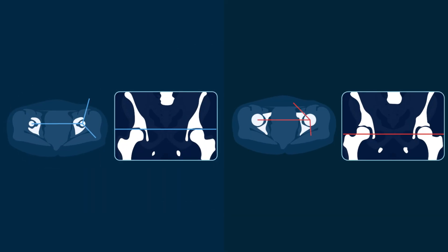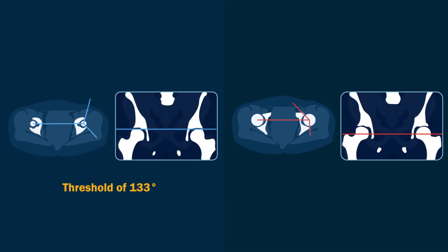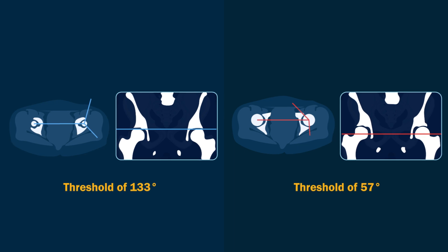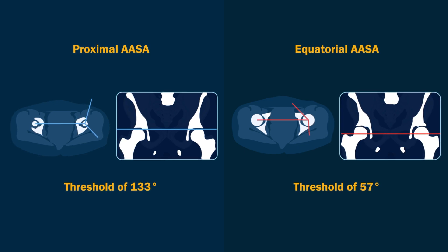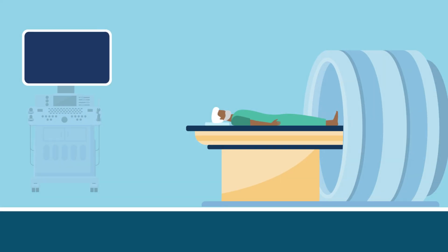The threshold values for anterior ASA were 133 degrees and 57 degrees for proximal and equatorial anterior ASA, respectively.